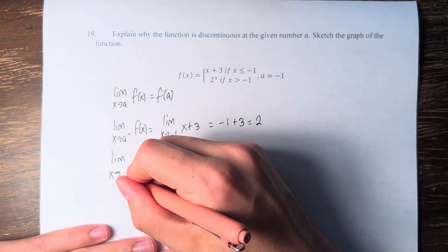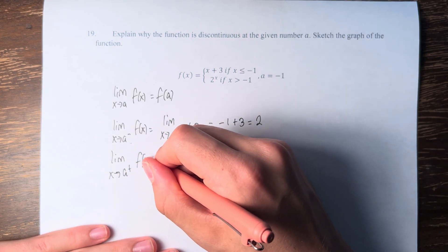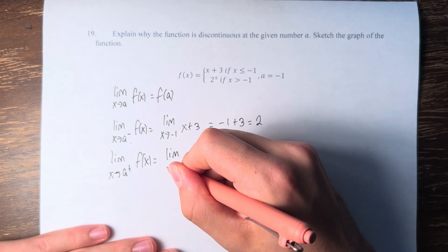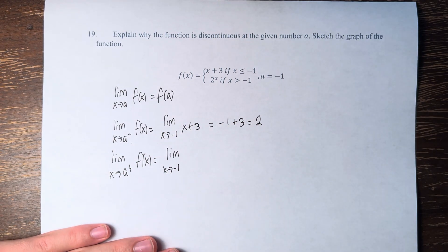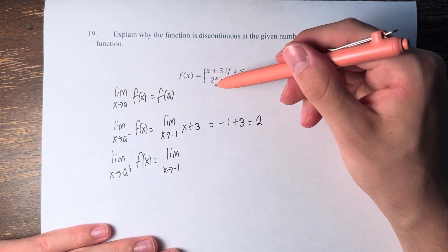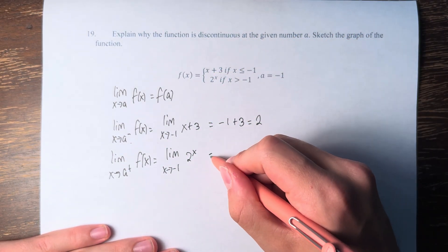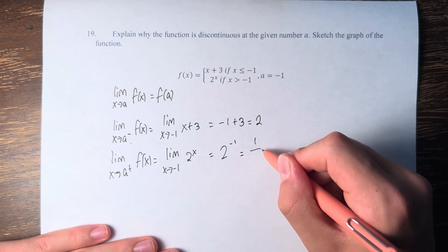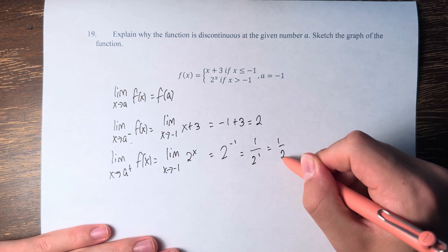The limit as x approaches a from the right of f of x is the limit as x approaches negative 1 from values that are greater than negative 1, which means we're using 2 to the x, which means this is 2 to the negative 1, which is 1 over 2 to the 1, or 1 over 2, 1 half.